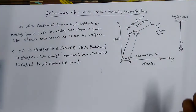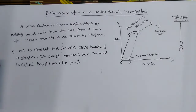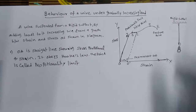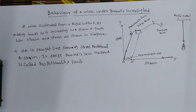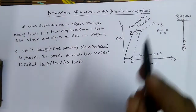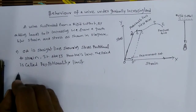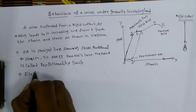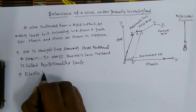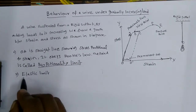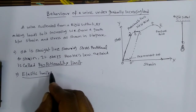Next, if you add some more weight, what happens? If you remove the weight, the wire doesn't regain its original shape, but it still has elastic nature. That is explained by point B. This is point number 2, that is the elastic limit. Point A is the proportionality limit, and point B is called the elastic limit.